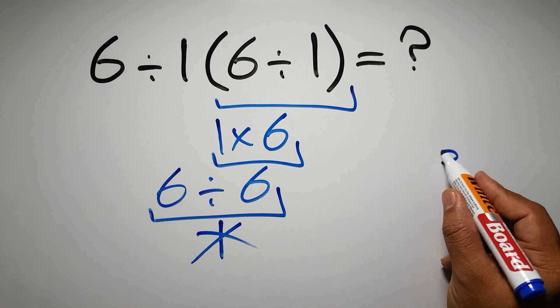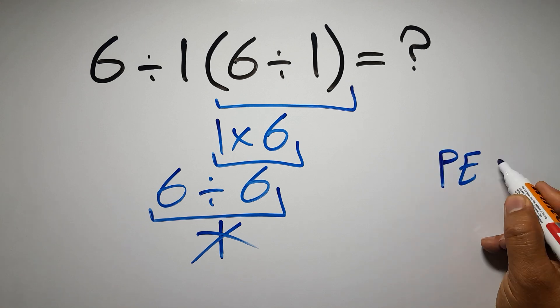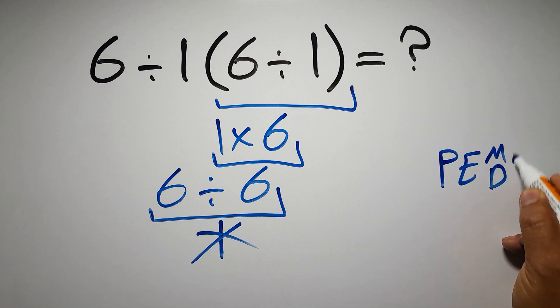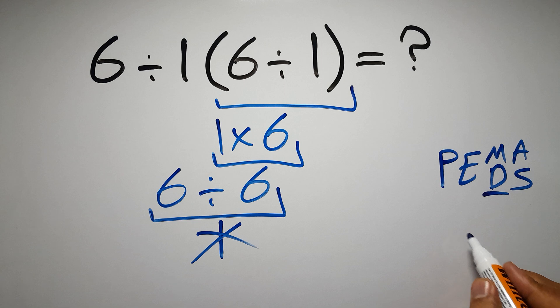First we have to do parentheses, then exponents, then multiplication or division, and finally addition or subtraction. Remember that multiplication and division have equal priority and we have to work from left to right, and the same applies to addition and subtraction.